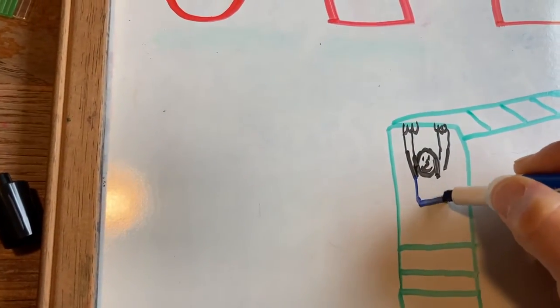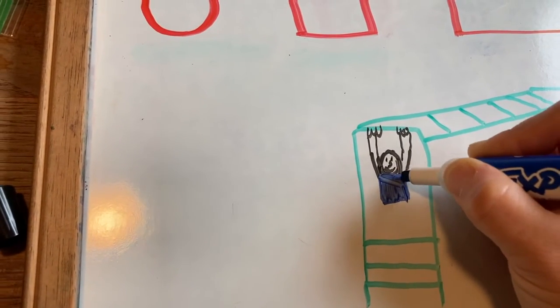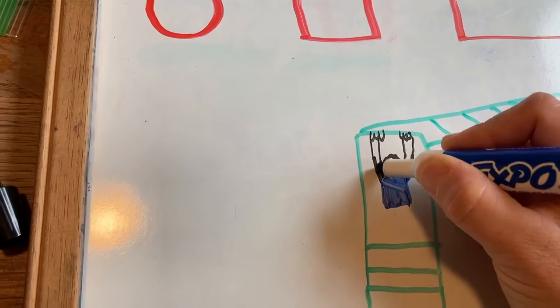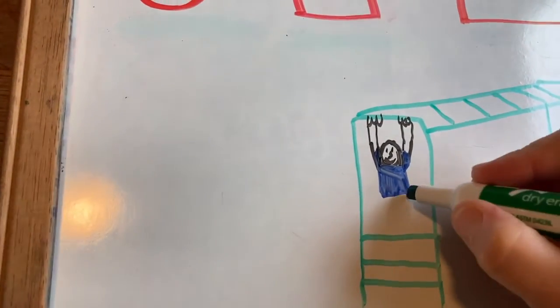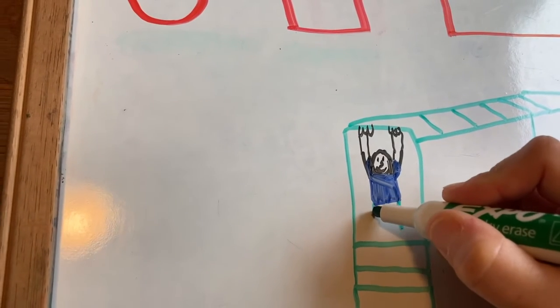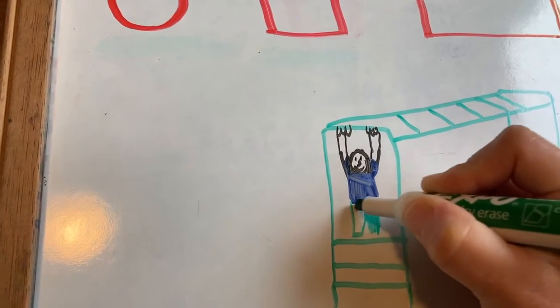So here's my square. Color it in. And my sleeves on my arms. And then I have green pants. I match the monkey bars.